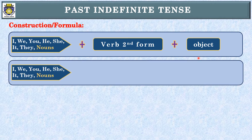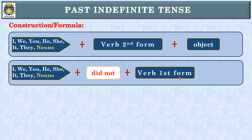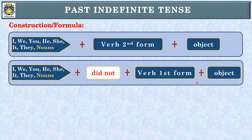If we create a negative sentence in past indefinite tense, the subject comes first. Then instead of the second form, we use 'did not' followed by the first form of the verb. So in a negative sentence, we place 'did not' between the subject and the first form of the verb to complete the sentence.